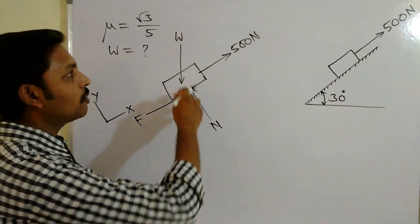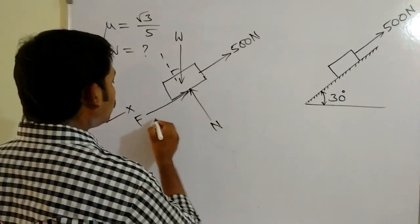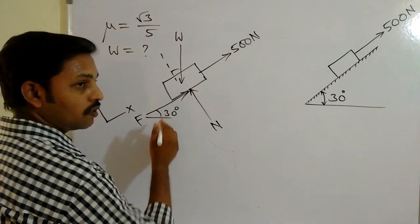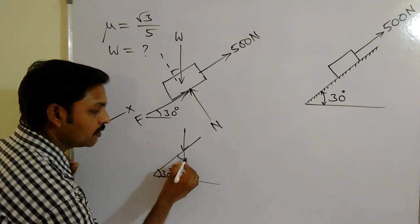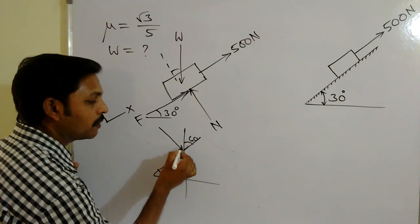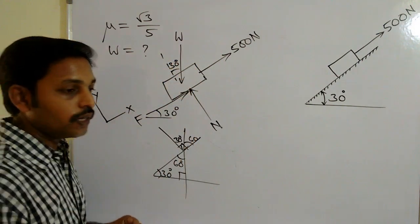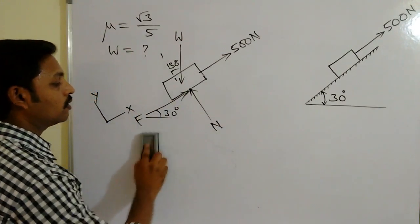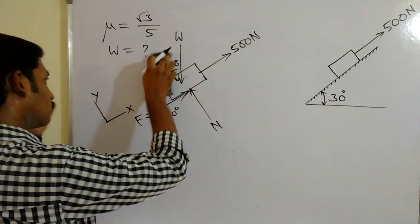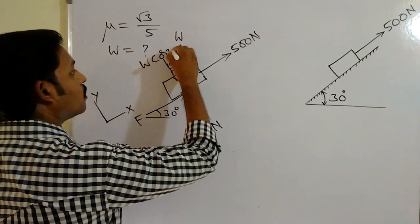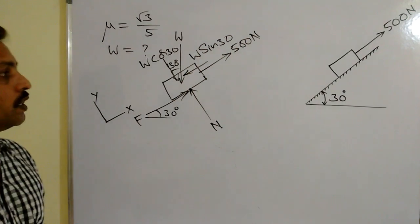Three forces are along the plane and one is perpendicular to the plane. You need to find the angle of the weight with the vertical. The incline angle with the horizontal is given as 30°, so with the vertical it is 60°. Drawing a perpendicular line to the inclined plane gives an angle of 30°. Therefore, the weight W can be resolved into two components: perpendicular to the plane as W cos30° and along the plane as W sin30°.